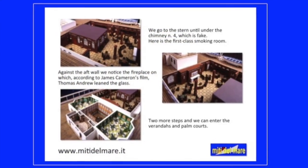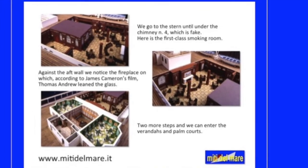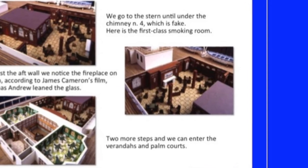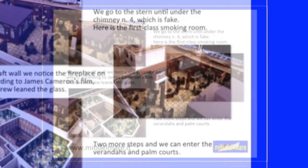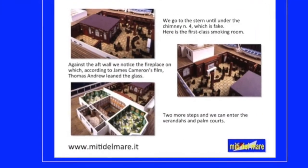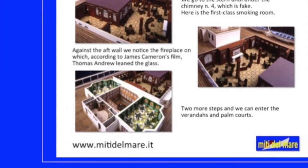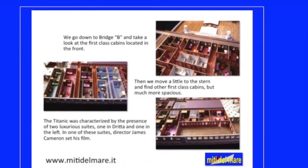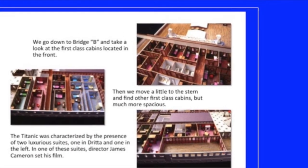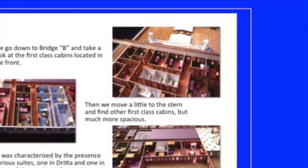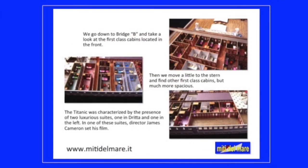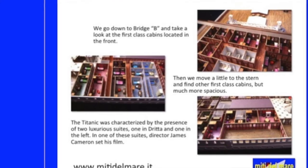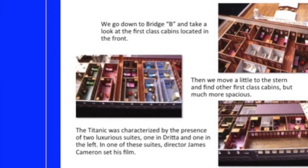Against the aft wall we notice the fireplace on which, according to James Cameron's film, Thomas Andrews laid the glass. Two more steps and we can enter the verandas and palm courts. We go down to Bridge B and take a look at the first class cabins located at the front. Then we move a little to the stern and find other first class cabins, but much more spacious.